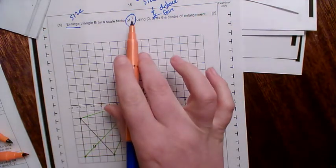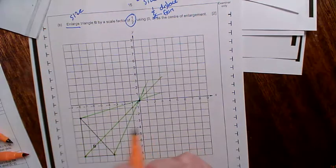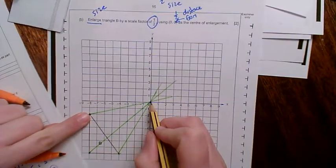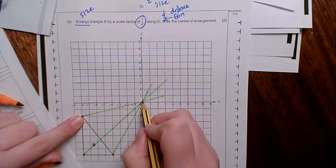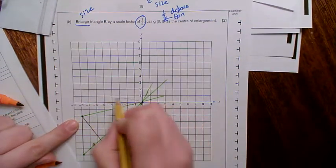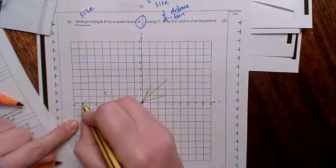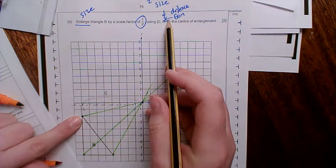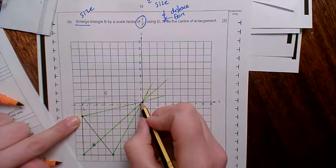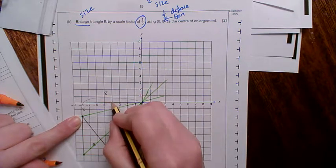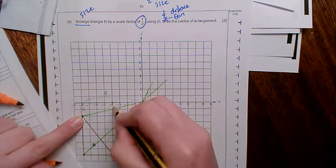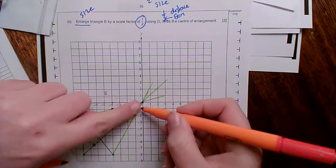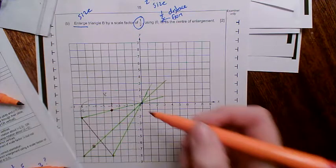So I just need to find now where the points that are half the distance would fall. So, from the centre, to get to this point, I'll deal with this point first. To get from the centre to this, I go across 8, and down 2 squares. Now, I need the new shape to be half that distance, so instead of going across 8, I need to go across 4. And instead of going down 2, I need to go down 1. That gives me that point there. So it's gone half the distance across, and half the distance down.